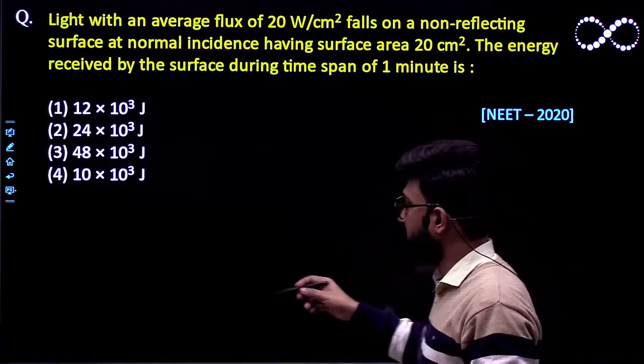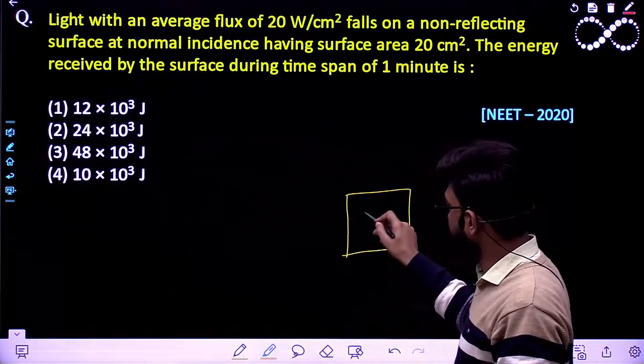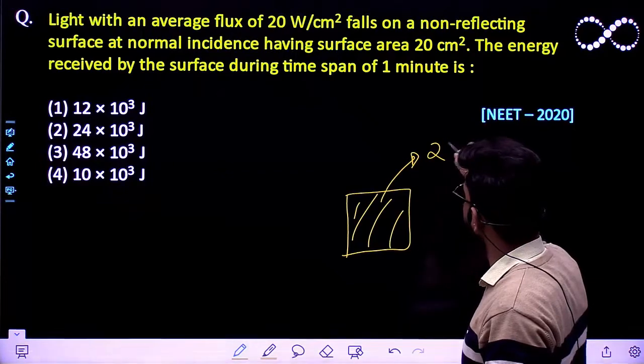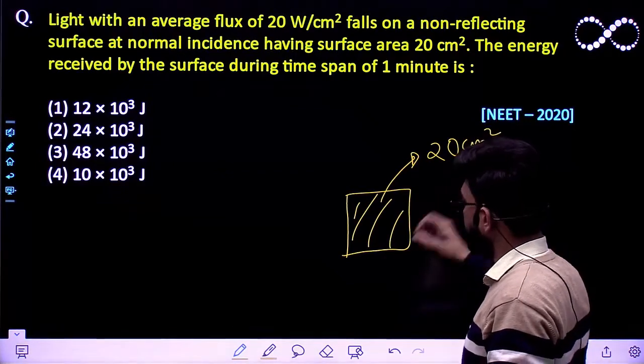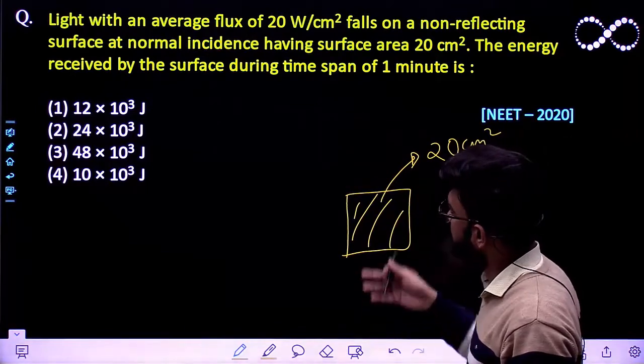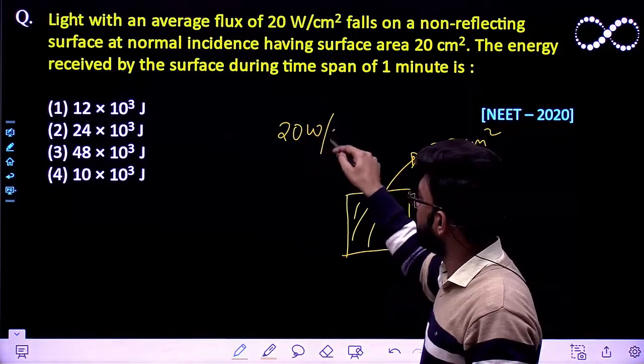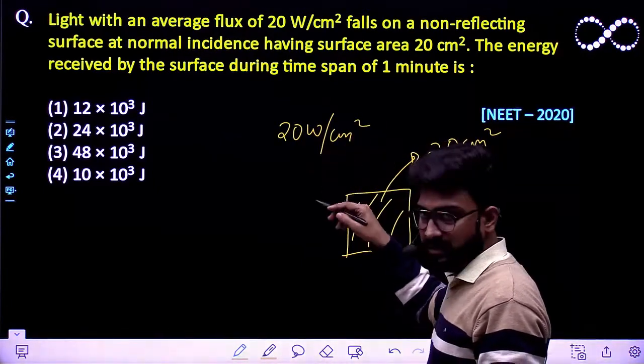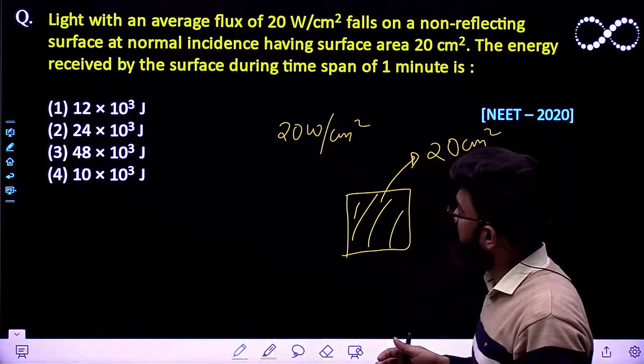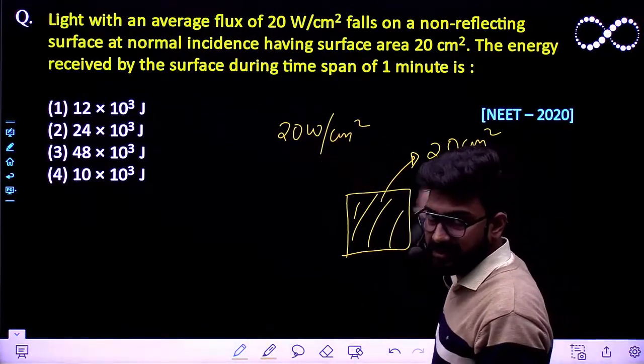So that means there is a certain region in space or you can say certain area in space whose area is 20 centimeter square on which light is incident. And light is incident in such a way that its average flux is given by 20 watt per centimeter square. So that means 20 watt of energy is being transferred to it onto this surface per centimeter square.